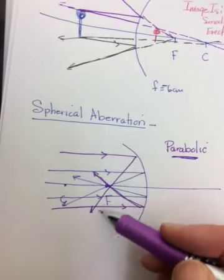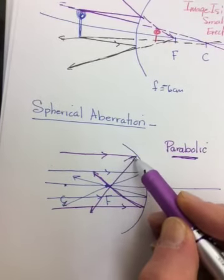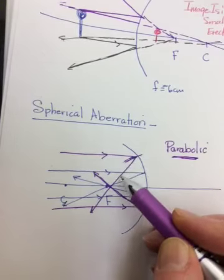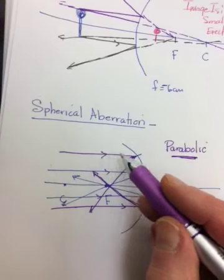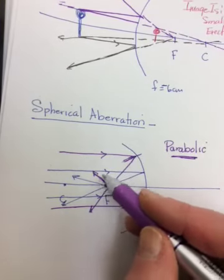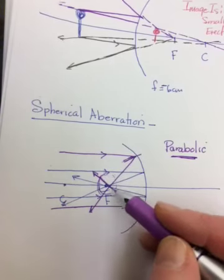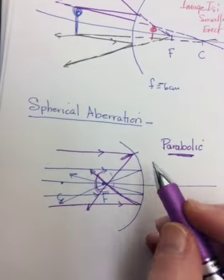So it's a phenomenon that happens in mirrors where the light rays that are hitting the outer ridge are not getting bent enough, right? Because they have to follow that law of reflection where the angle of incidence has to equal the angle of reflection. So they're not getting bent enough to pass through F, and so at this spot, instead of getting a nice clear image, you get a blurry image.